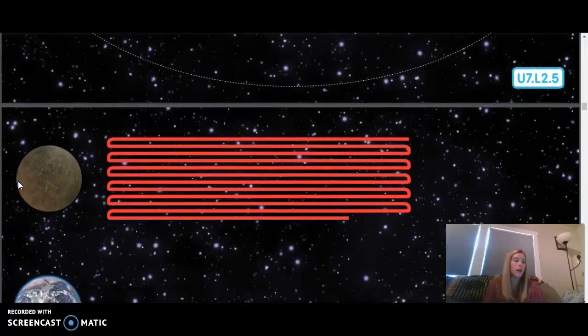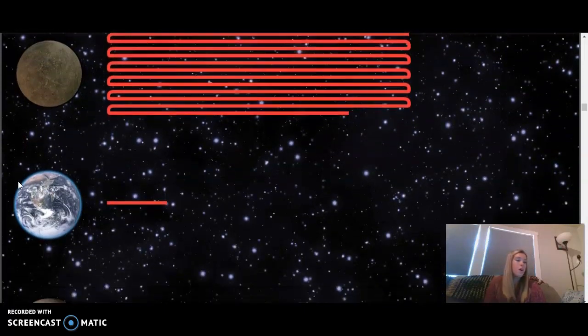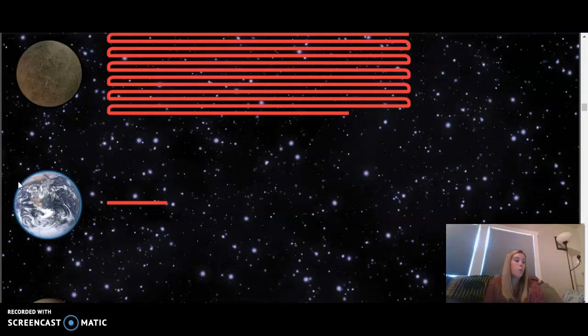Besides orbiting the sun, each of the eight planets in our solar system also rotates on its own axis. Remember, an axis is the imaginary line that goes from a planet's north pole through its south pole right through its center. One day on a planet is the time it takes the planet to rotate one full time on its axis. Other planets have shorter and longer days than Earth. One day on Mercury takes about 58 Earth days, because Mercury rotates on its axis very slowly. Jupiter's rotation is much faster, clocking in at about one Jupiter day for every 10 Earth days.